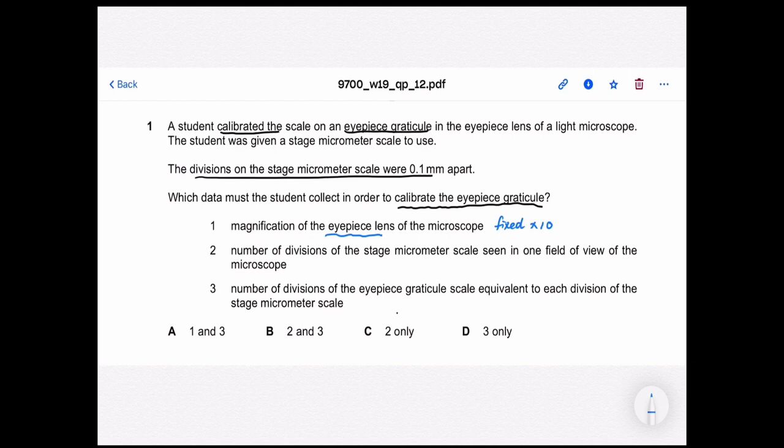Then number two, number of divisions on the stage micrometer that is within the field of view. We need to know the number of divisions that matches with the eyepiece reticule. But do I really care how many divisions are there within the field of view?